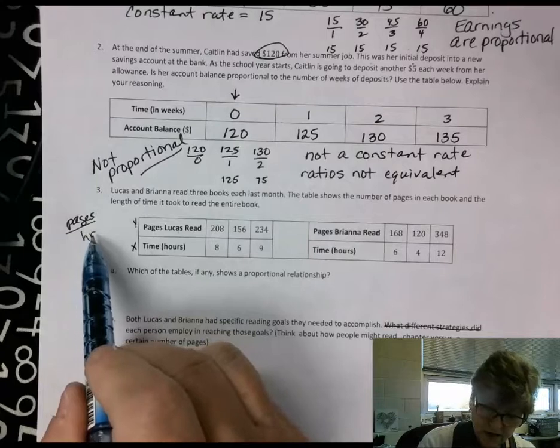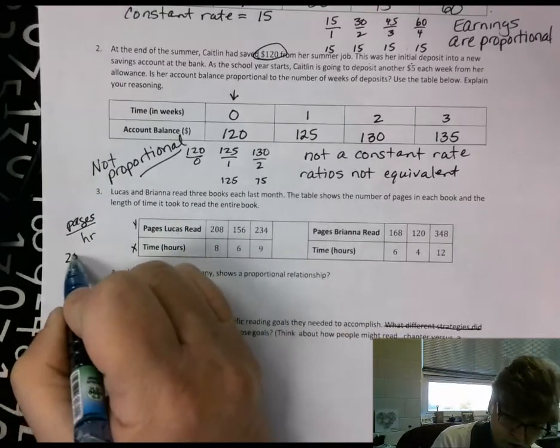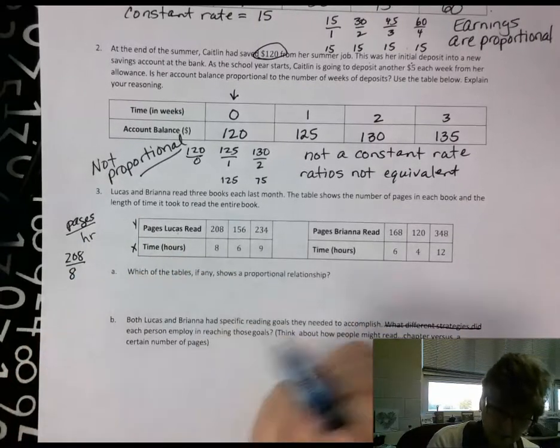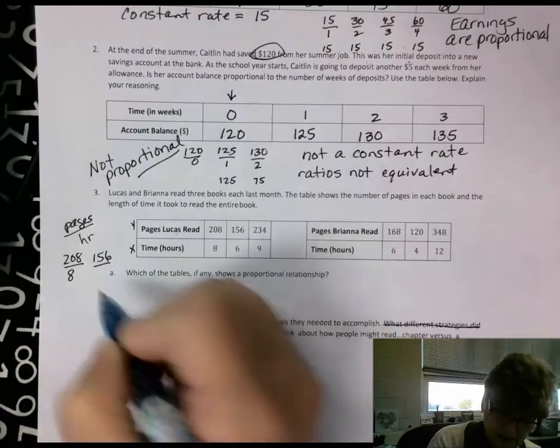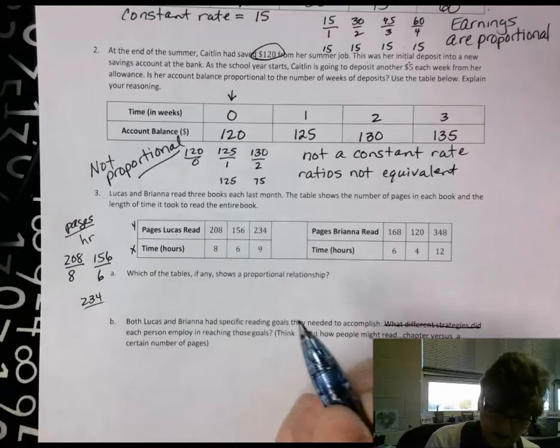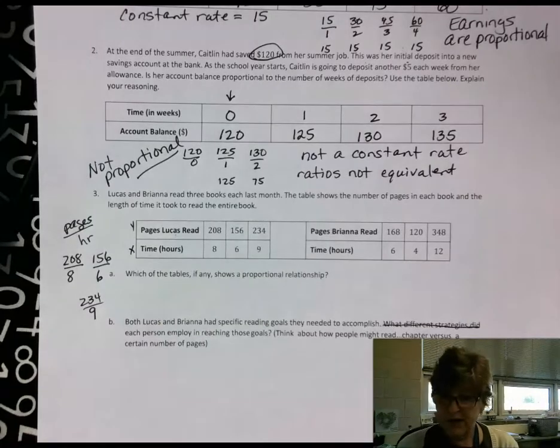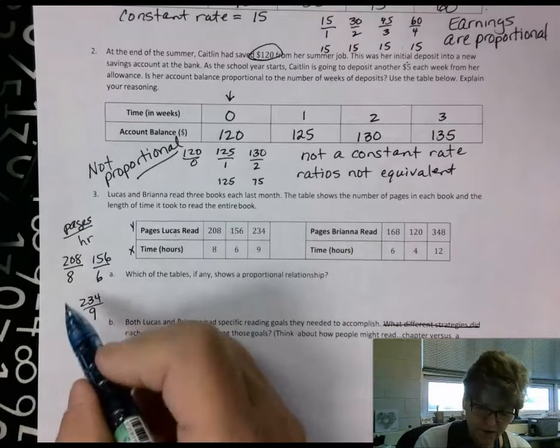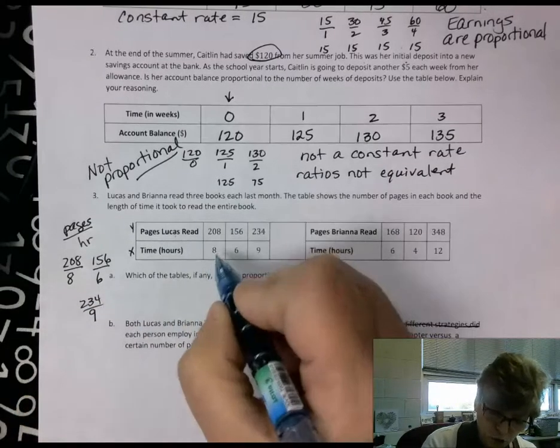Looking at this, we have 208 over 8, 156 pages in six hours, and we have 234 pages in nine hours. If you take a calculator or you do your division, you're going to find that each one of these equals 26.